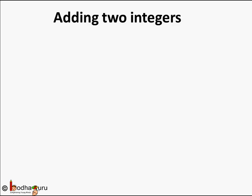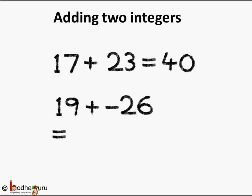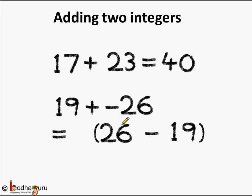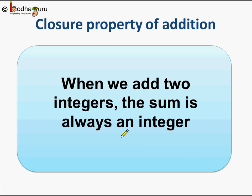What happens when we add two integers? Let us see. 17 plus 23 is equal to 40. For 19 plus minus 26, we are adding one positive and one negative integer, so we get 26 minus 19. We put the sign of the number with higher absolute value, which is 26, so the answer is minus 7. When we add two integers, the sum is always an integer — this is the closure property of addition.